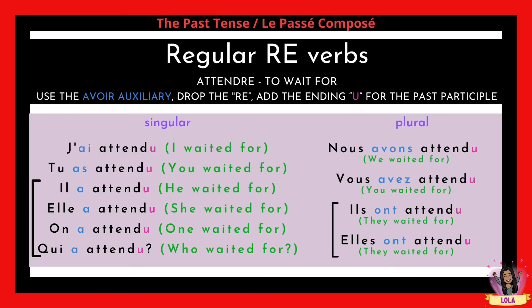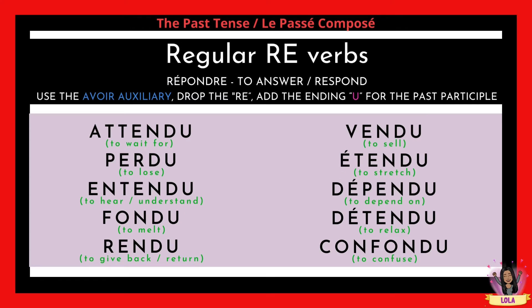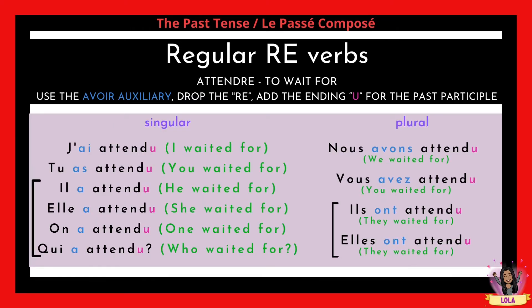Let's look at the full conjugation of attendre. J'ai attendu, tu as attendu, il a attendu, elle a attendu, on a attendu, qui a attendu, nous avons attendu, vous avez attendu, ils ont attendu, elles ont attendu.